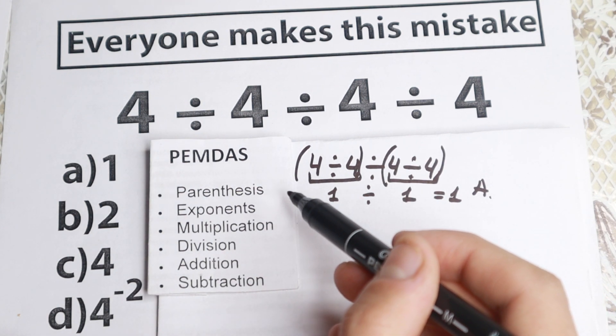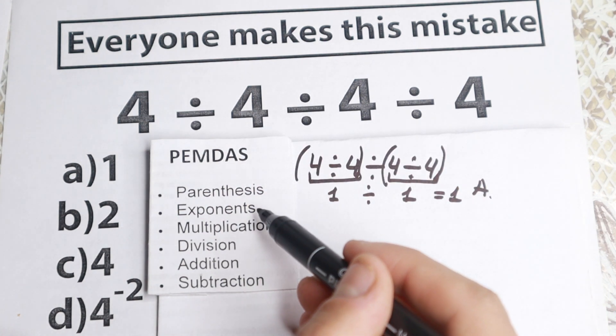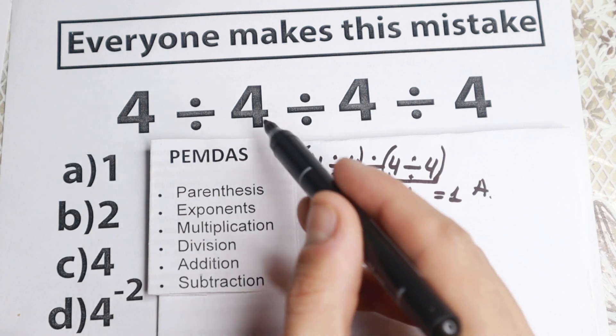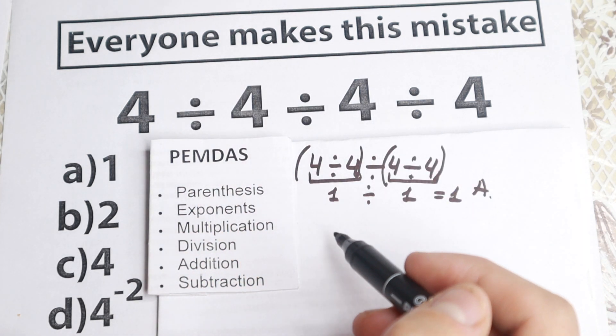So first of all, we have parentheses. This is our first step. Do we have parentheses right here? No, I don't see any parentheses. What about exponents? I don't see any exponents right here. We have the first power all the time, no squares, no cubes, no fourth power.